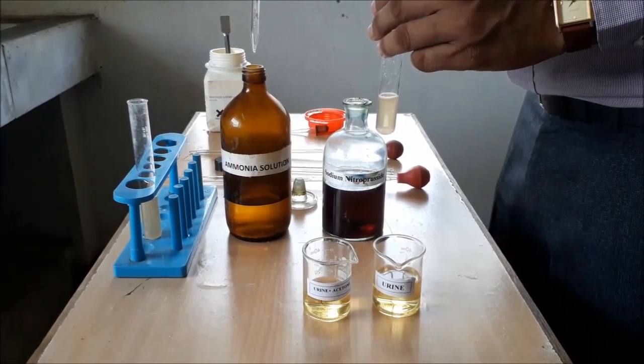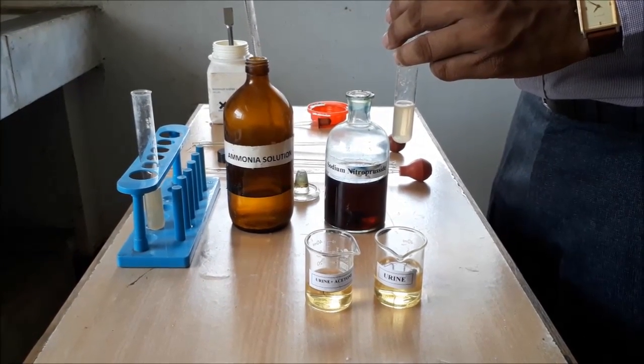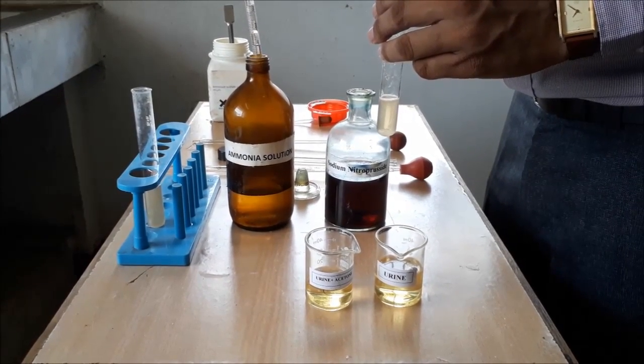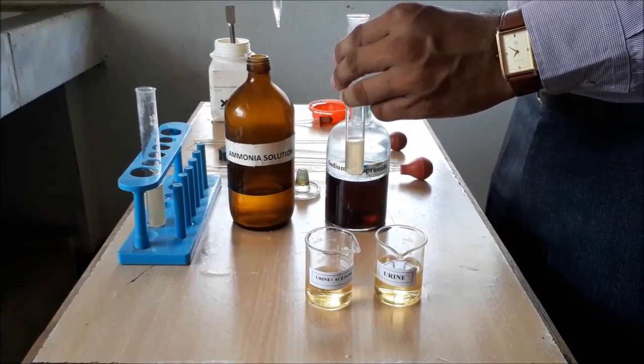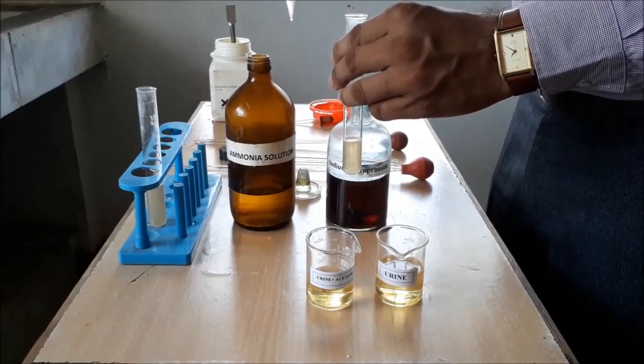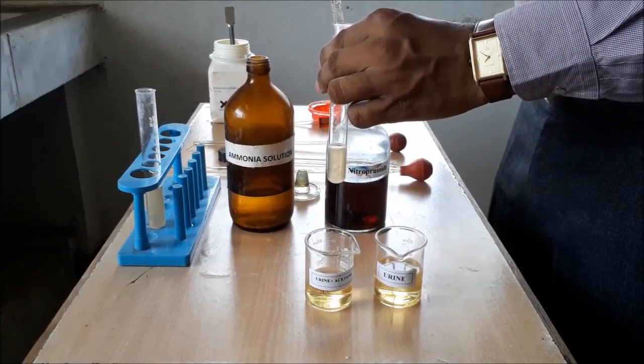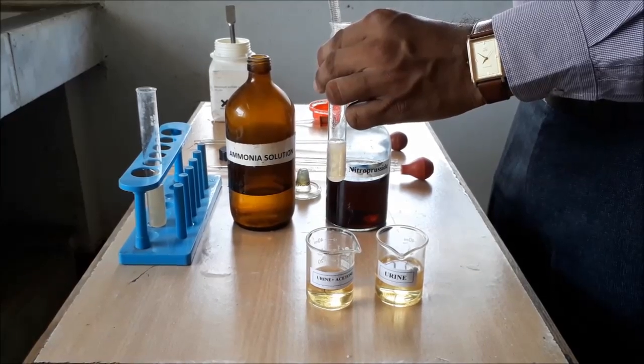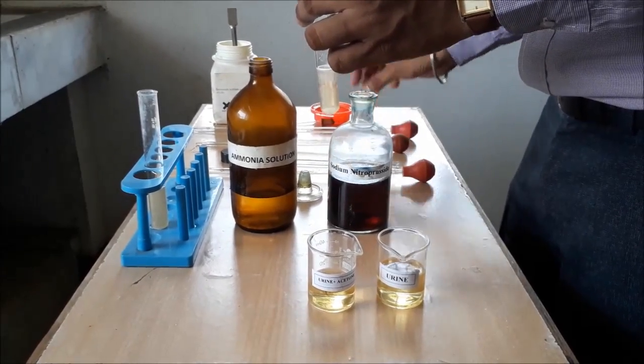And again, 2 ml of strong ammonia solution in the test tube. The strong ammonia solution should be poured through the wall of test tube.